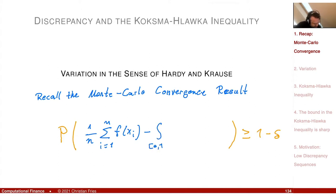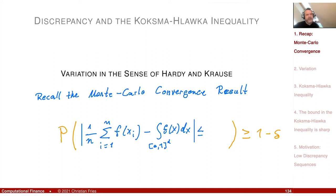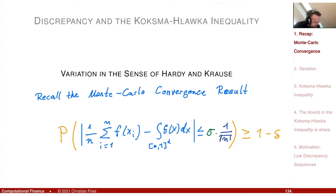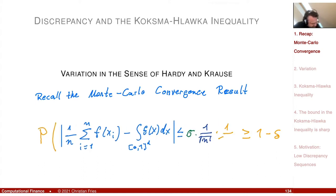Over the unit cube in d dimensions, the integral of f(x) dx, with probability larger than one minus delta, our error is smaller or equal to sigma times one divided by the square root of n, times one divided by the square root of delta, which is a property from this probability.